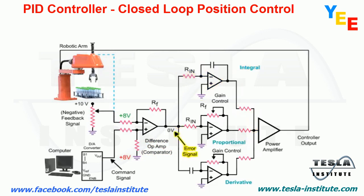With an error signal of zero, the output voltage of the integral amplifier is zero. The integral amplifier increases gain depending on the duration of the error signal. For example, the longer the error is present, the larger the amplifier gain.